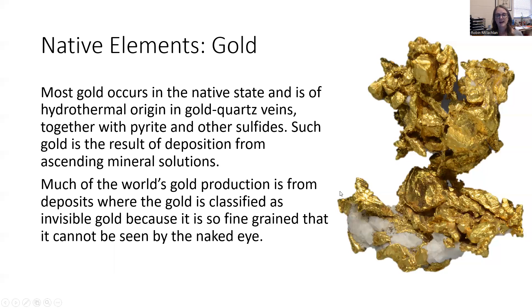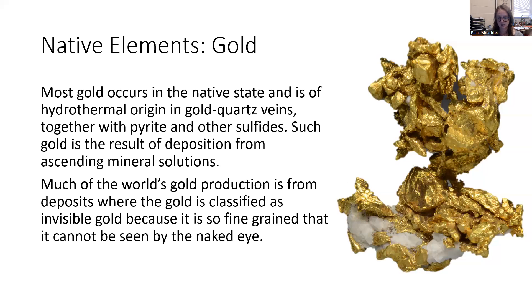Much of the world's gold is produced from deposits where the gold is classified as invisible gold — meaning you're very rarely going to find a visible chunk of gold like in pictures. Rather, the little specks of gold are so small you can't see them with the naked eye, but our mining technology can actually separate it out in a mill.